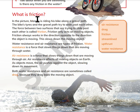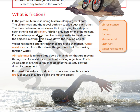In this picture, Marcus is riding his bike along a gravel path. The bike's tires and the gravel path try to slide past each other. The force between the two surfaces that are trying to slide past each other is called friction. Friction only acts on moving objects. Friction always works in the direction opposite to the direction the object is moving, which slows down the moving object.